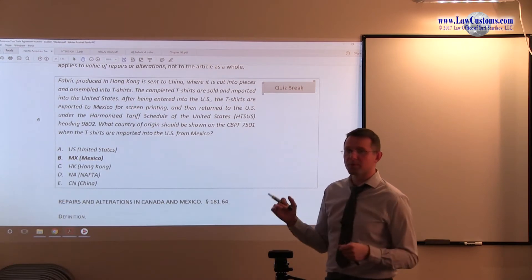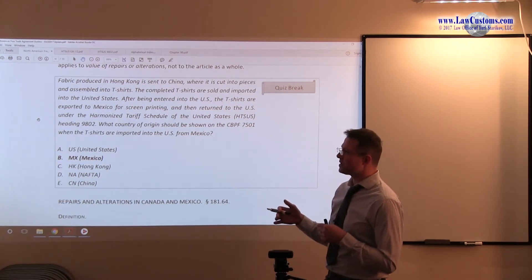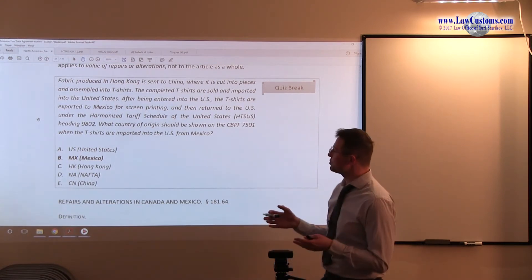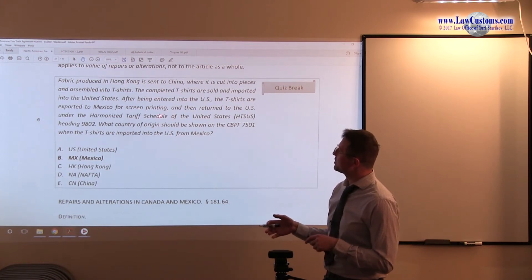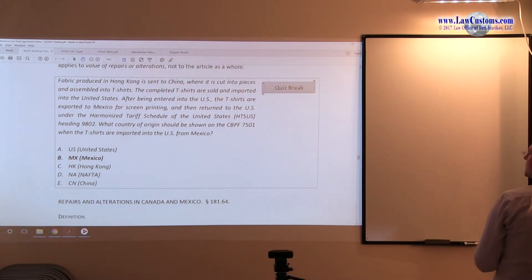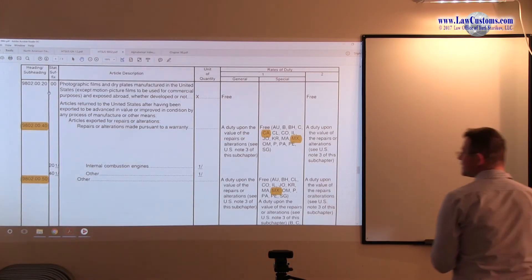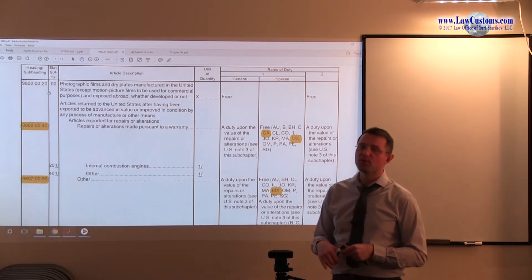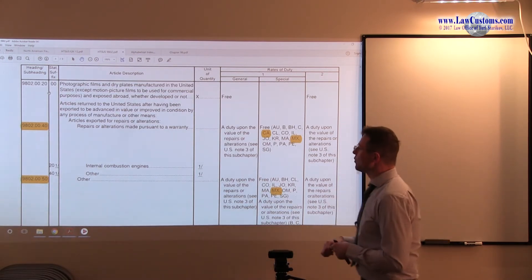So here, remember, we do not need to engage in that General Note 12 analysis, or General Note 12 analysis for that matter. All we need to do is to know that it has been altered or repaired. Here, most likely, the alteration provision applies. So if we go to 9802, most likely, it would be articles exported for alterations. And this would be the applicable HTS number. You would put Mexico, and you would claim duty-free for the alterations part.